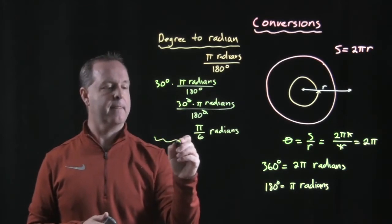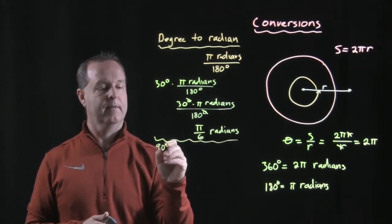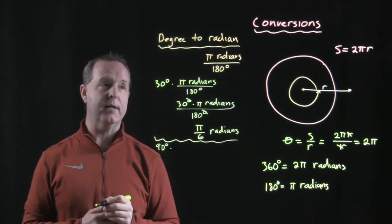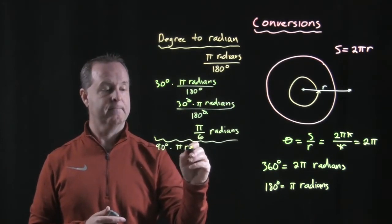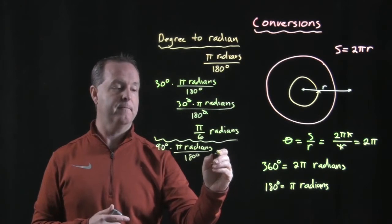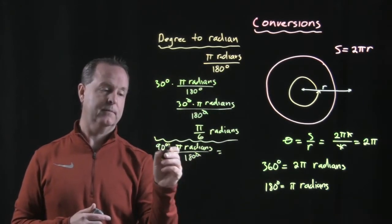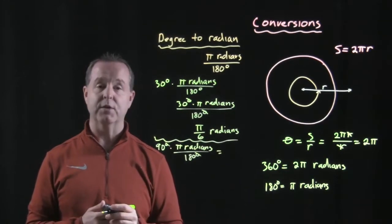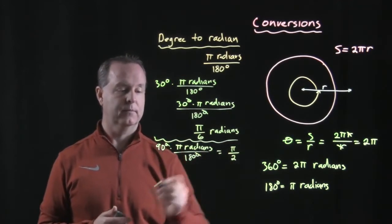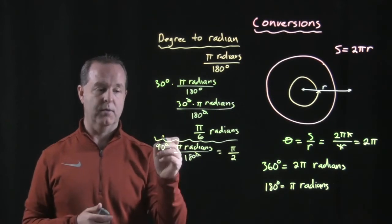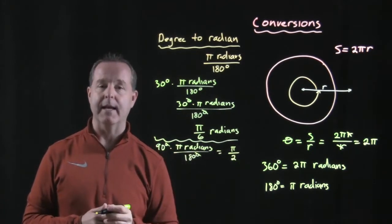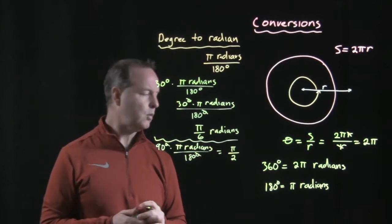What is 90 degrees converted to radians? We use our conversion that we built based off of our relationship: 90 degrees times pi radians over 180 degrees. Multiply that through — the degrees cancel. 90 divided by 180, that ratio reduces to one half. So my solution is pi halves radians. So 90 degrees — remember, that was a right angle — is the same thing as pi halves radians.